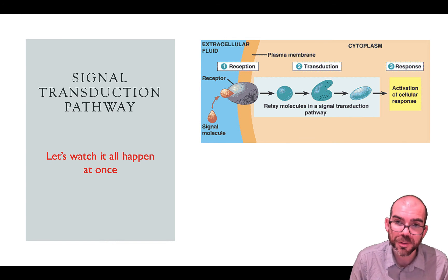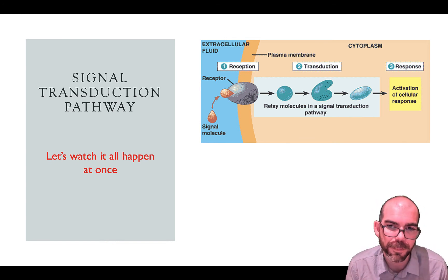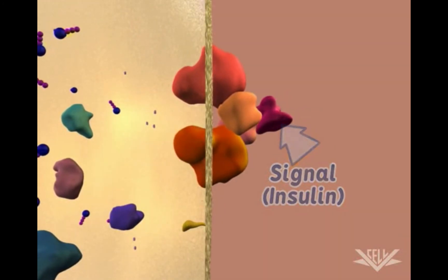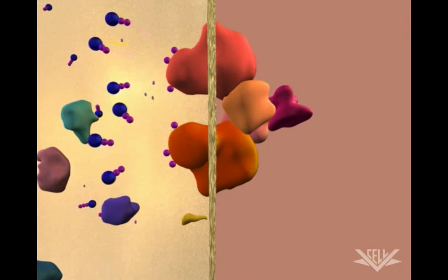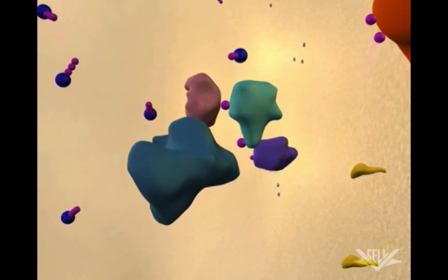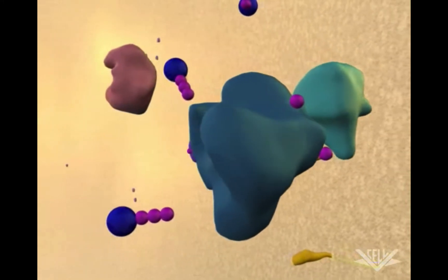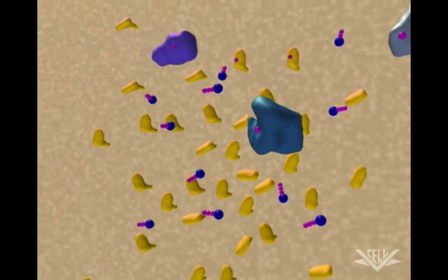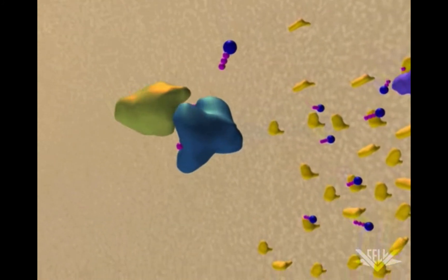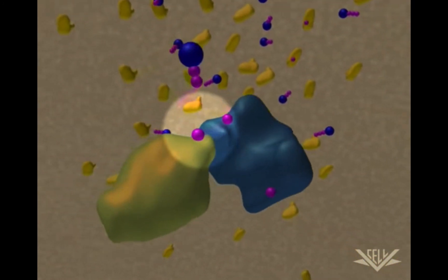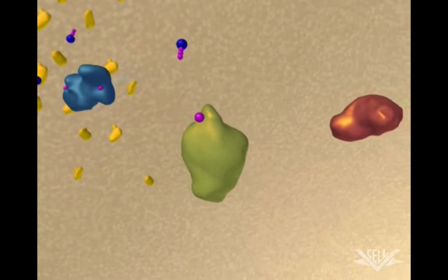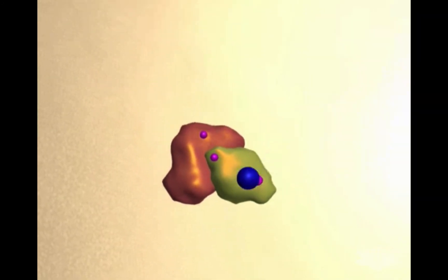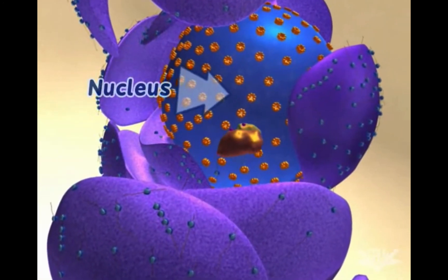So we've seen variation in reception, transduction, and response — let's see it all happen simultaneously. Here we're going to look at insulin, which is used to regulate blood sugar. It attaches to a receptor, which responds by releasing phosphates and activating a protein. Notice how that protein is going to stimulate more phosphates to be added — those are ATP molecules — so you're seeing a phosphorylation cascade. One protein cascades to another with the addition of a phosphate, transducing the signal from molecule to molecule, getting the message deeper through the cytosol to its ultimate destination, the nucleus.